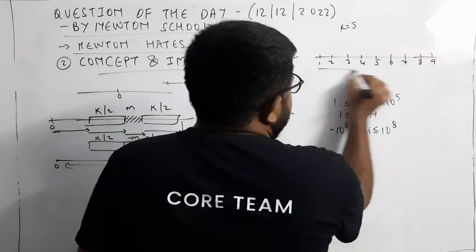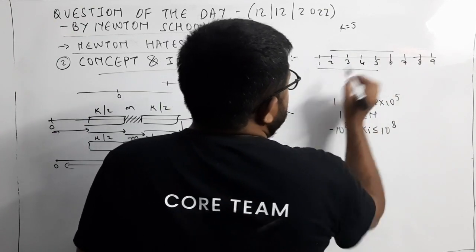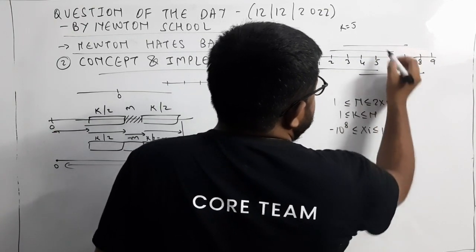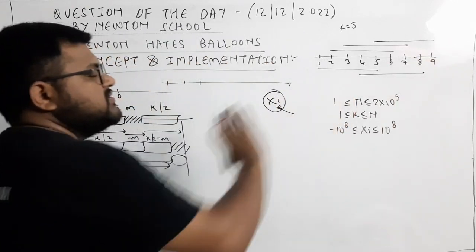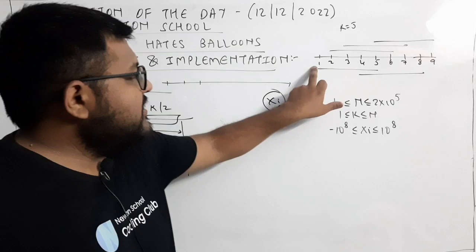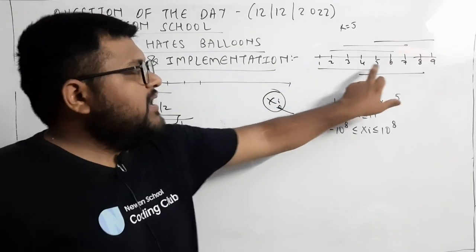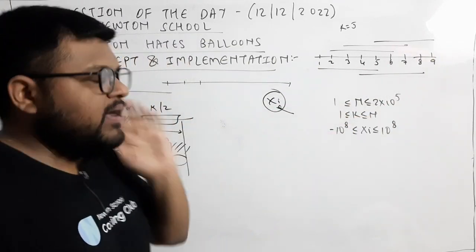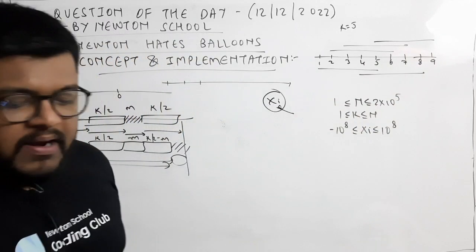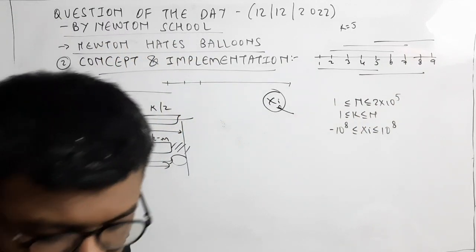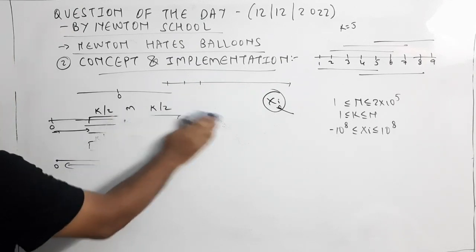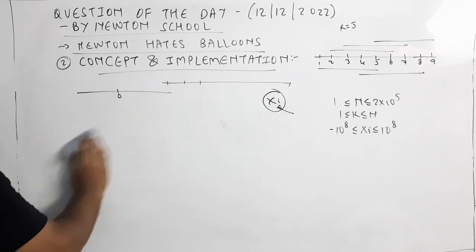देखो यह sets हम चेक करेंगे: 1 to 5, 2 to 6, 3 to 7, 4 to 8, और 5 to 9 — यह 5 चीजें हम चेक करेंगे कि इनको burst करने का कितना time लगेगा। याद रखना है यह मैंने balloon के index लिखे हैं, यह मैंने coordinate नहीं लिखे हैं।